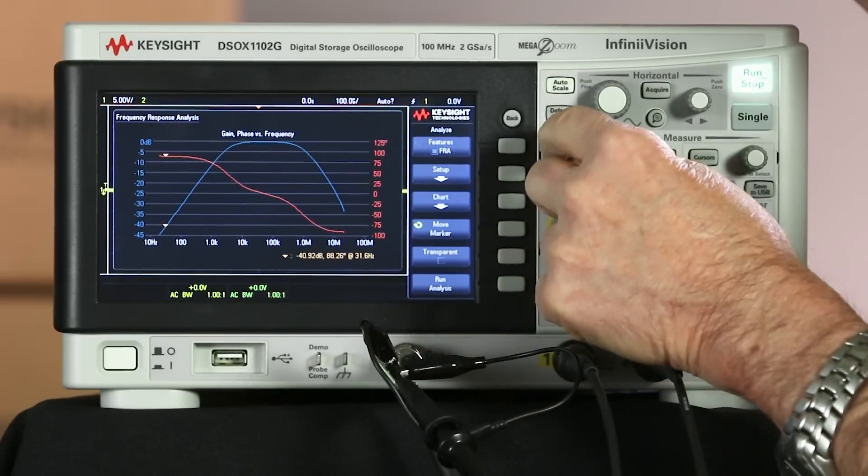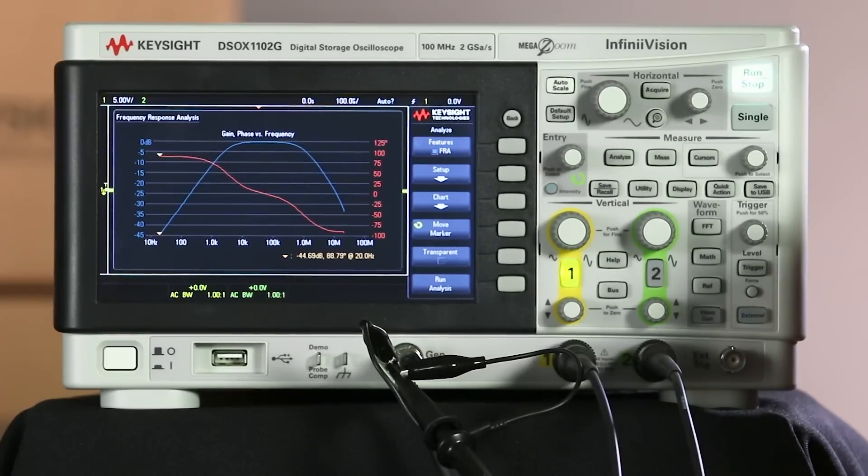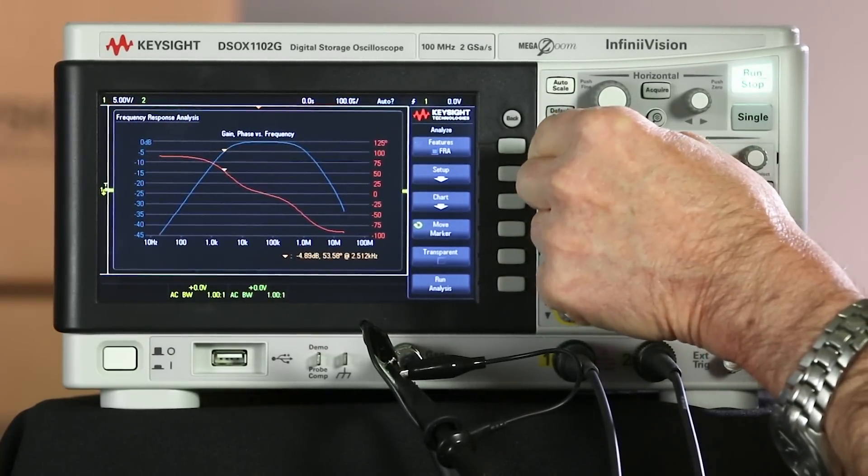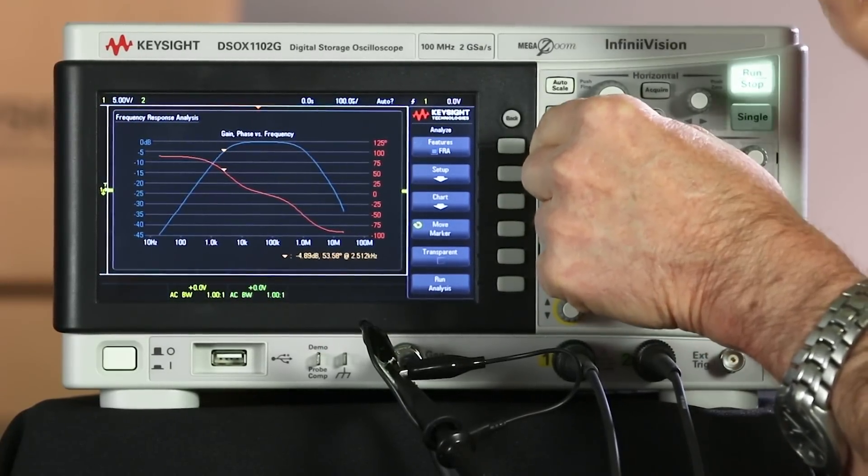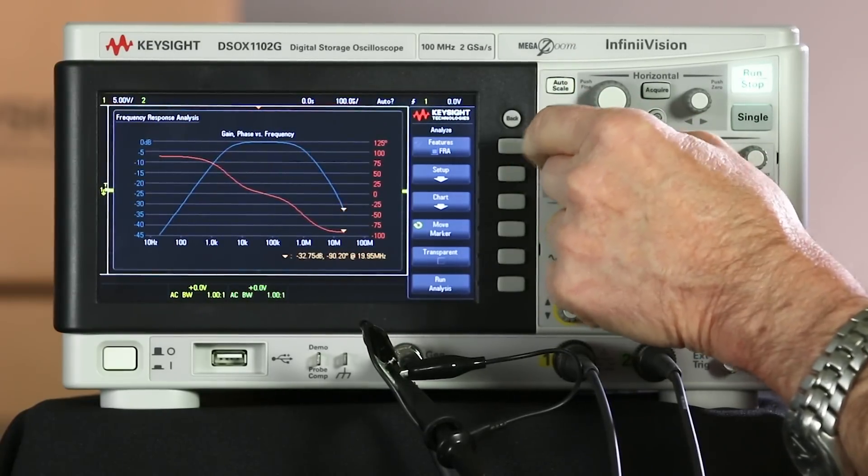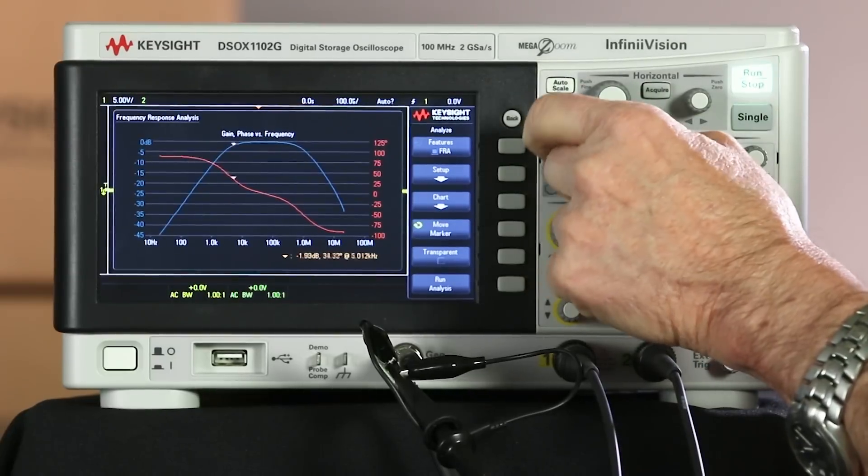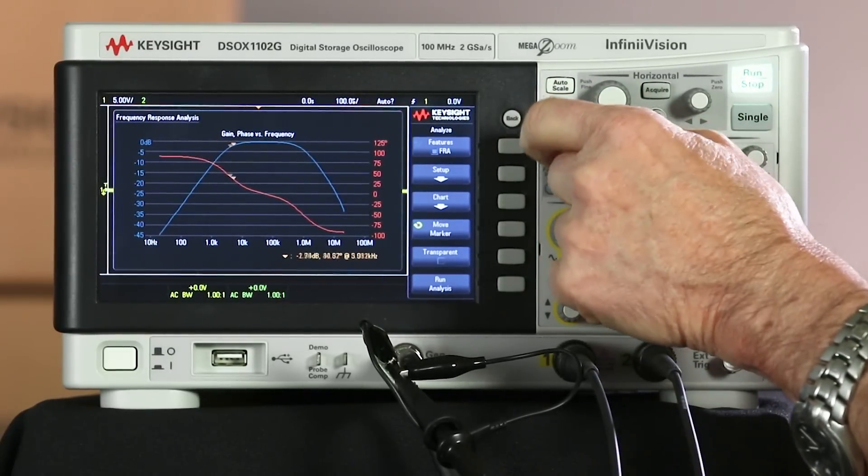Now, the marker readout is down here. Now, the minimum was minus 44.7 dB, and we could take it up here. We might want to lock it in around minus 3 dB if we're going to measure the bandwidth. And then we go out to the maximum. And so you can measure any gain and phase at any particular frequency.